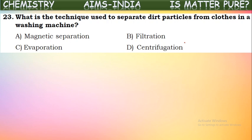What is the technique used to separate dirt particles from clothes in a washing machine? Dirt particles are removed from clothes in the washing machine by whirling, twisting, or rotating the drum fast. This process is called centrifugation. By centrifugation, dirt particles are separated from the cloth.